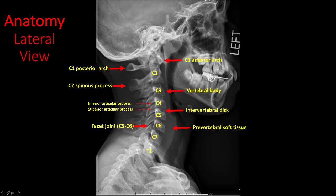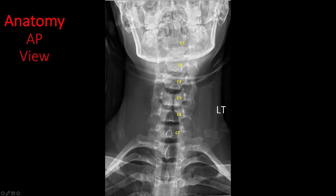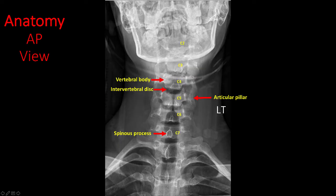Identify the soft tissues anterior to the vertebral bodies and the trachea. In the AP view, the upper portion of the cervical spine is usually obscured by the overlying mandible. Identify each vertebral body and the intervertebral disc space between them. In the vertebral bodies, the superior and inferior articular process along with the facet joint is known as the articular pillar. Identify the spinous process.